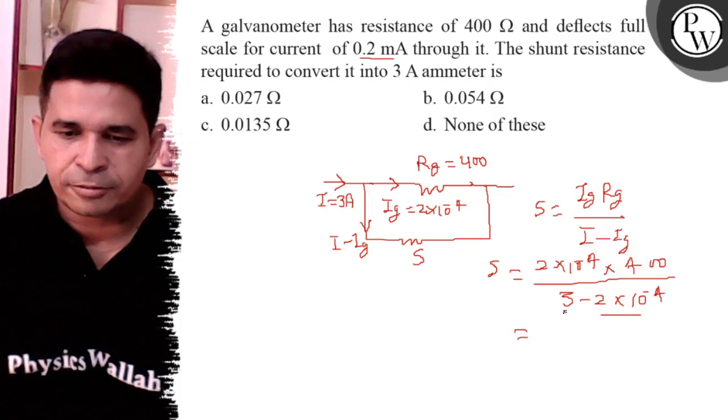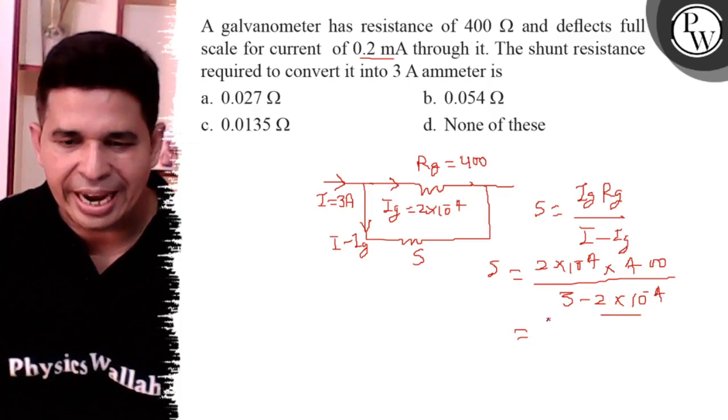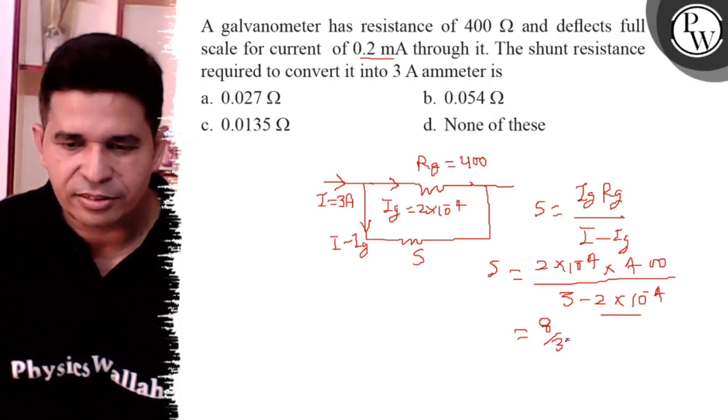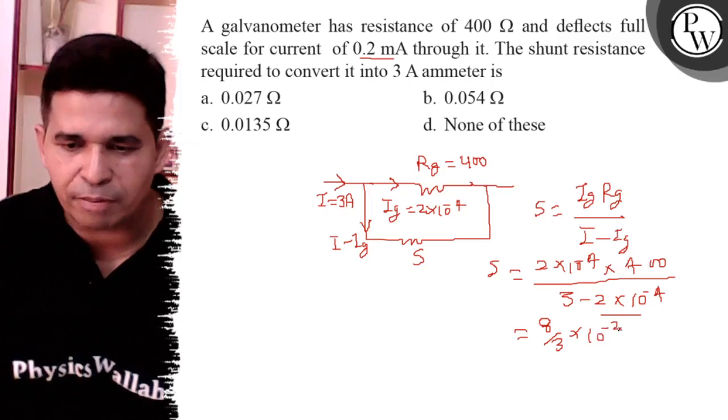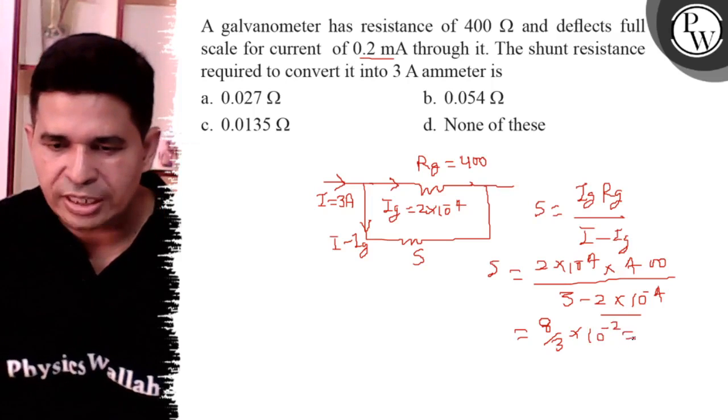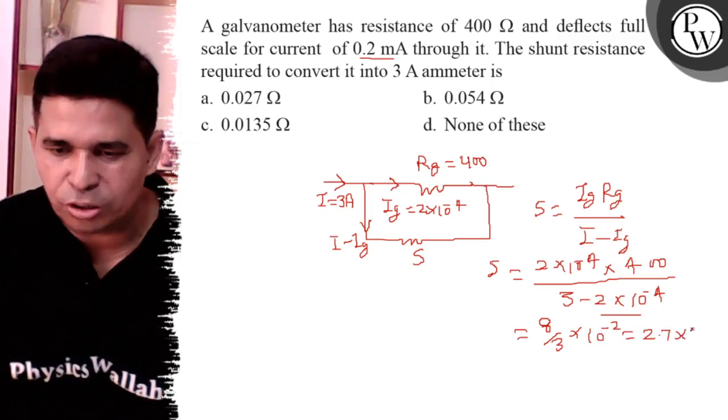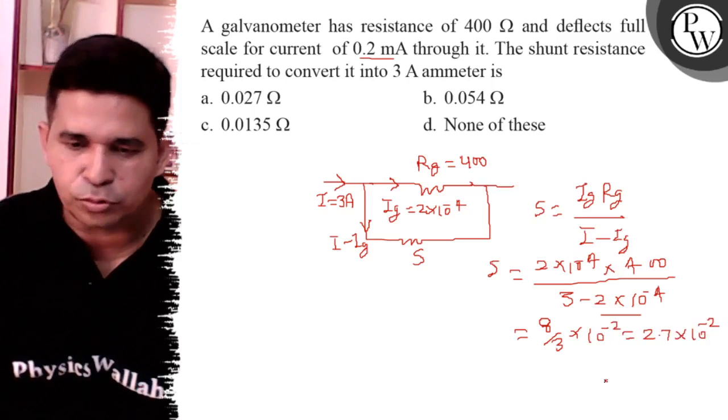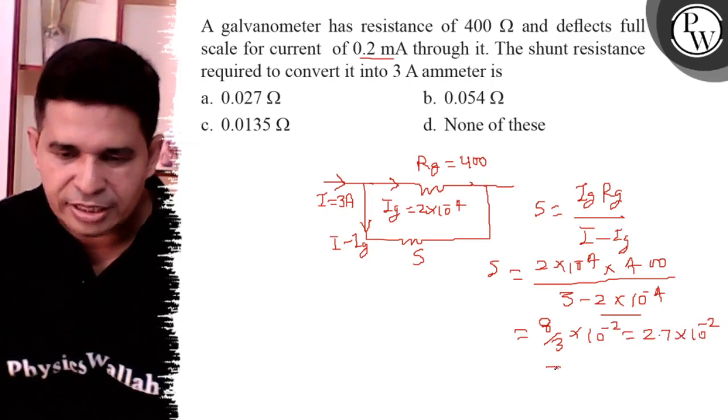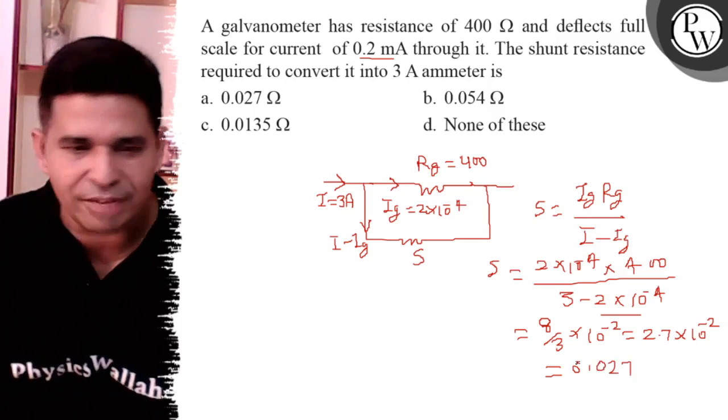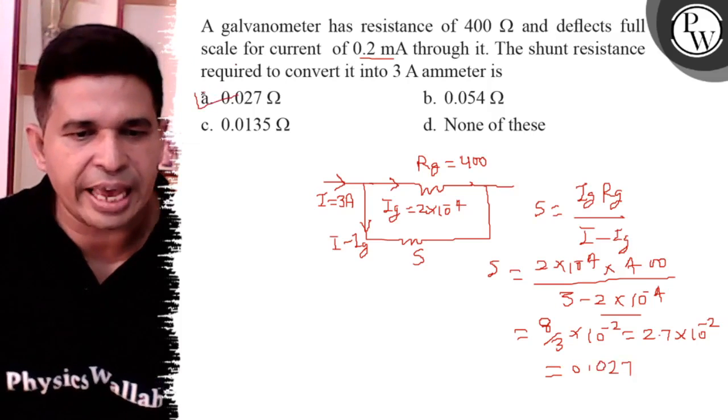It is 4 to the 8, 8 by 3 into 10 to the power minus 2, so it is 2.7 into 10 to the power minus 2. So it is 0.027, so final answer is A.